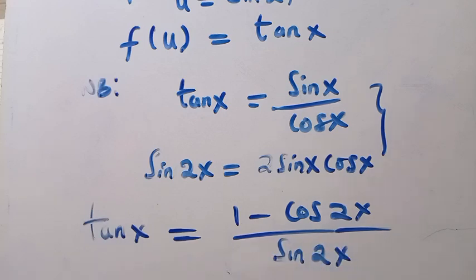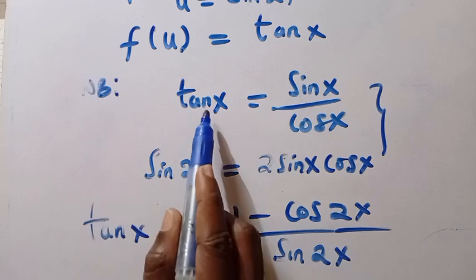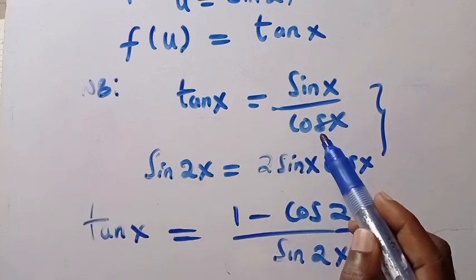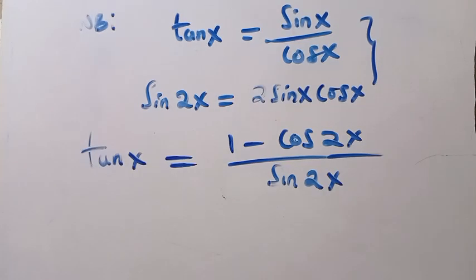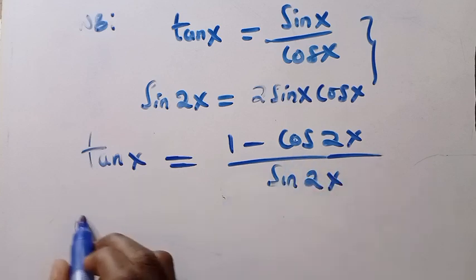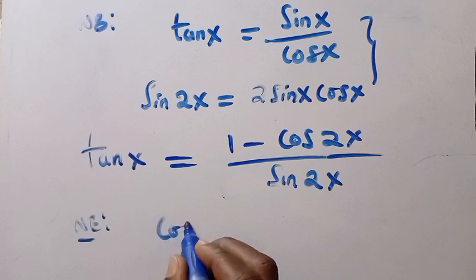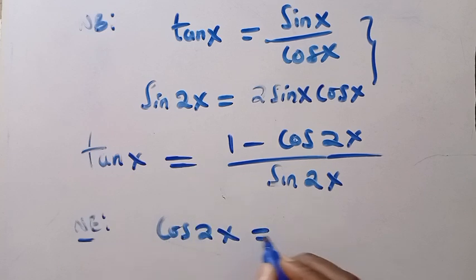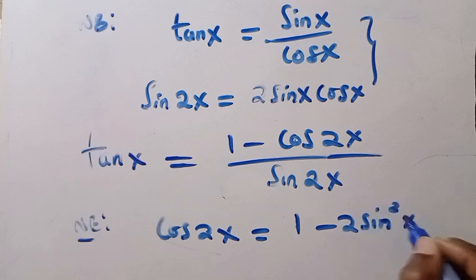How does this relate together? Tan x equals 1 minus cos 2x divided by sin 2x. Initially we said tan x equals sin x divided by cos x, and now it has become 1 minus cos 2x divided by sin 2x. Let's try and verify this. To verify this, we recall that cos 2x is given as 1 minus 2 sin squared x.